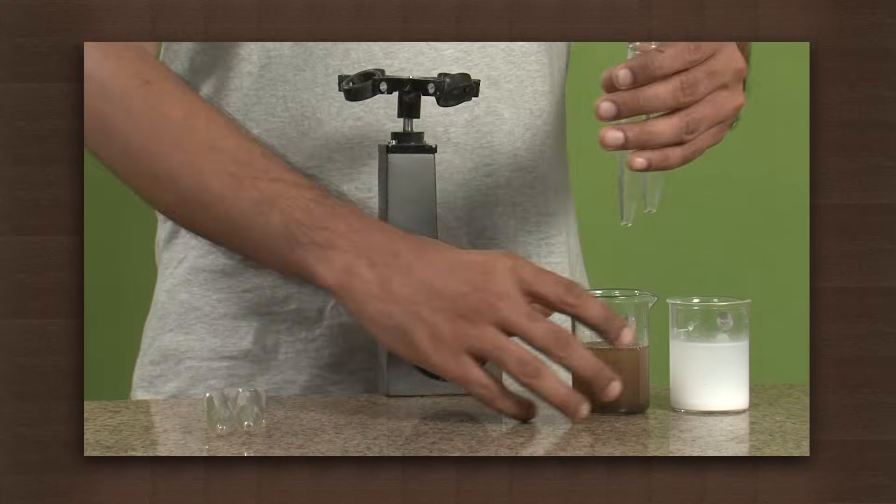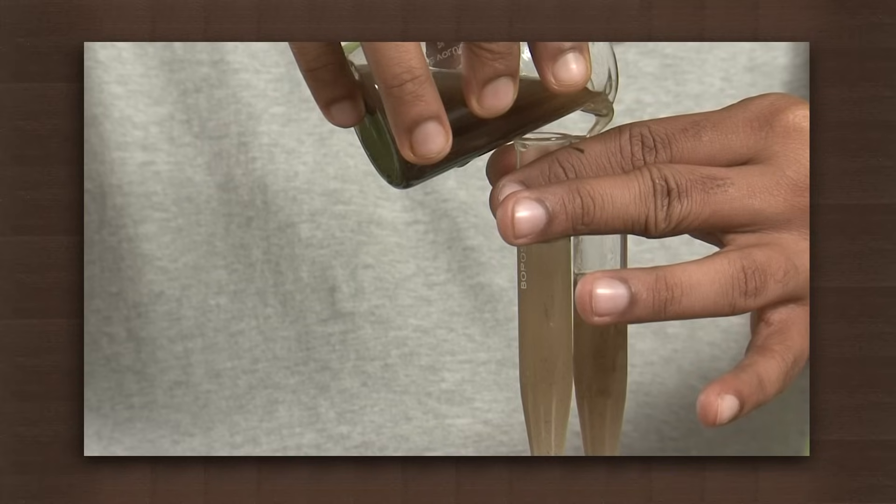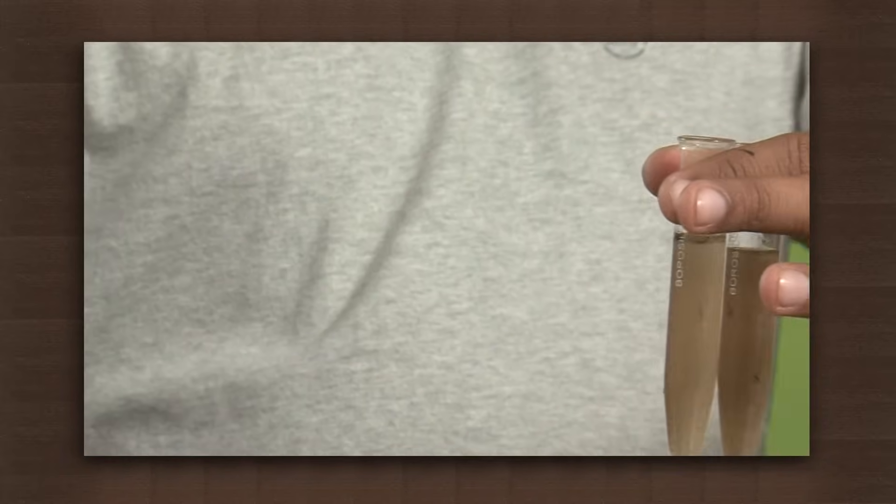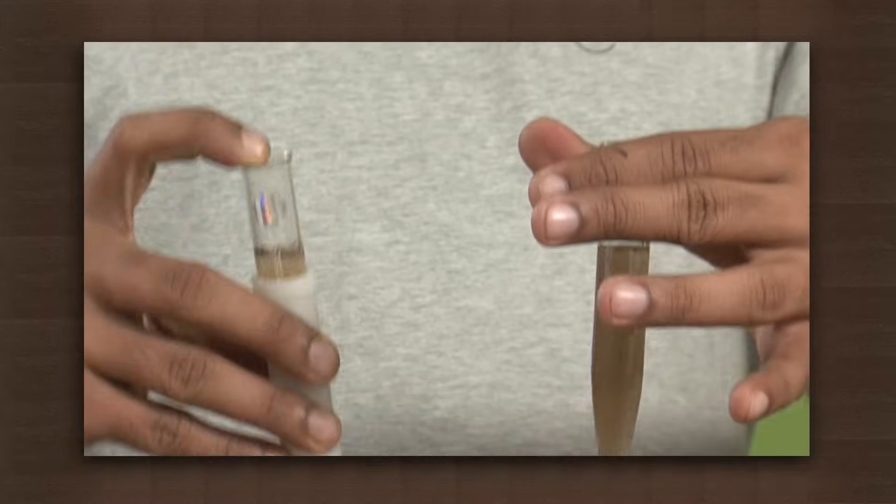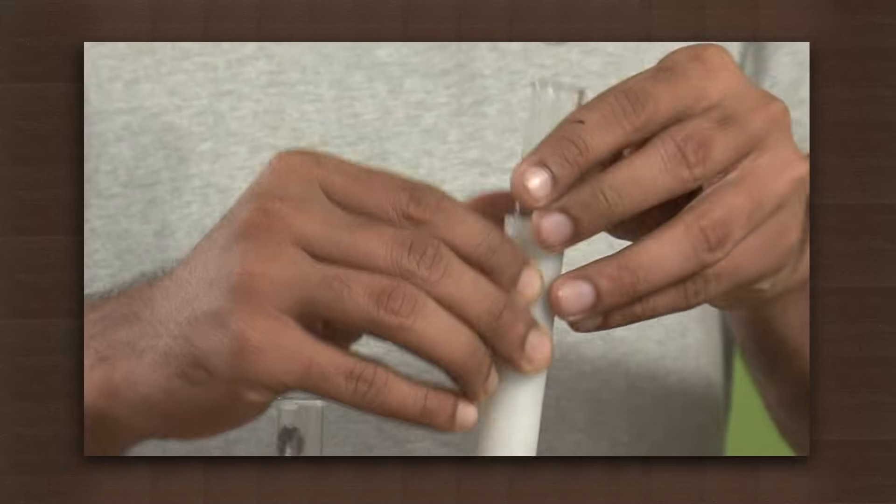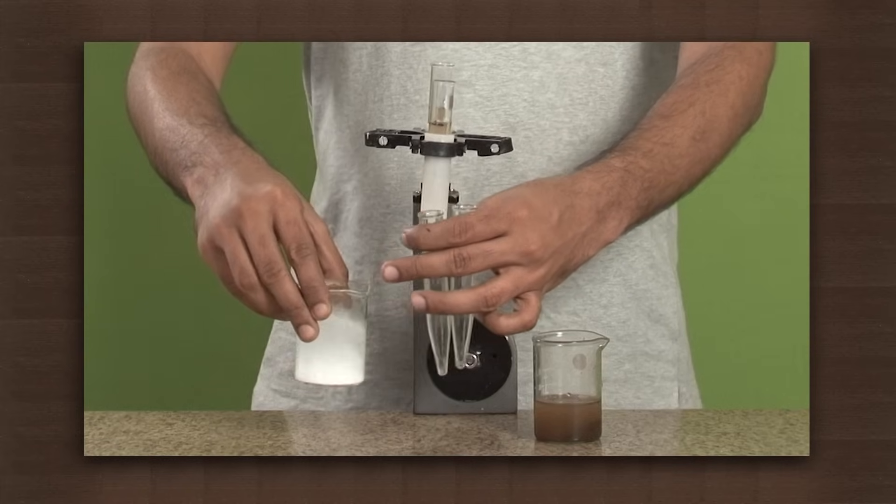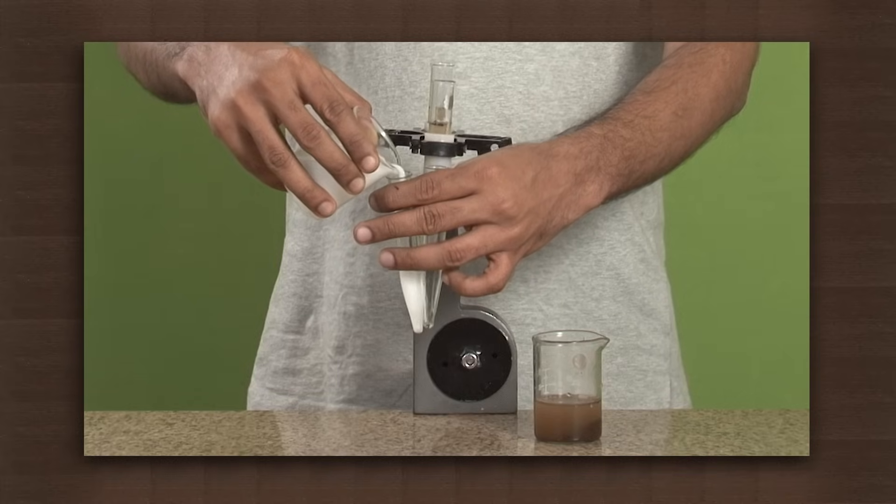Take the sample of muddy water and place the test tubes in the centrifuge machine. Now, take the calcium carbonate mixture in the test tubes and also place them in the centrifuge machine.